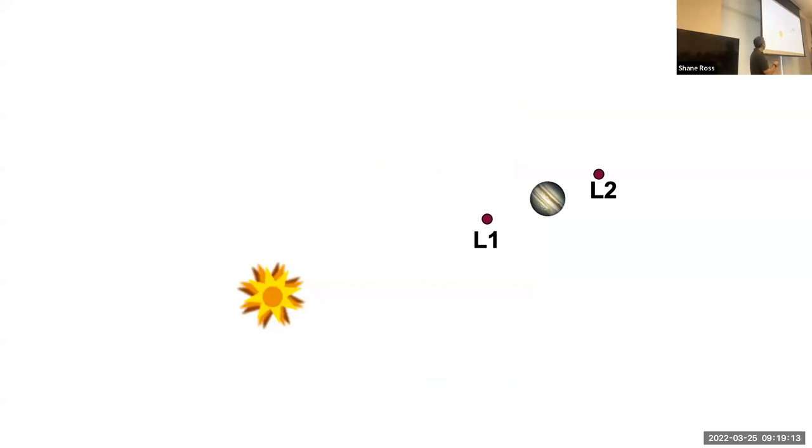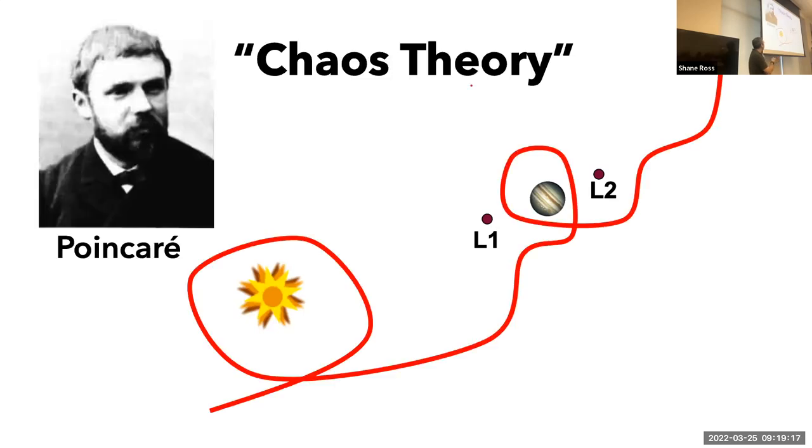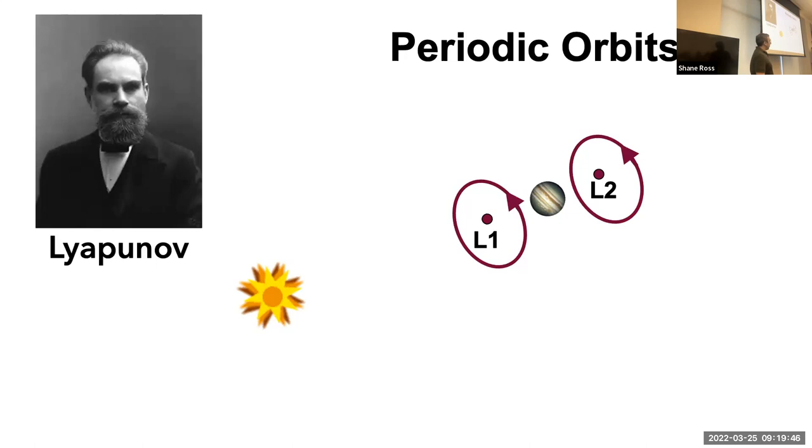If we look at the Sun-Jupiter system, Poincaré in the late 1800s was one of the first to try to tackle the three-body problem and basically develop what we now call chaos theory. Long before there were computers, he was doing geometric analyses and was able to demonstrate the existence of chaos in the three-body problem. Lyapunov, a Russian mathematician and mechanician, discovered that there were these unstable periodic orbits, which now bear the name Lyapunov orbits, and exist in the plane of the two massive bodies. In three dimensions you could have halo orbits because if you're standing at the planet and look back at the Sun, it looks like the orbit's forming a halo around the Sun.